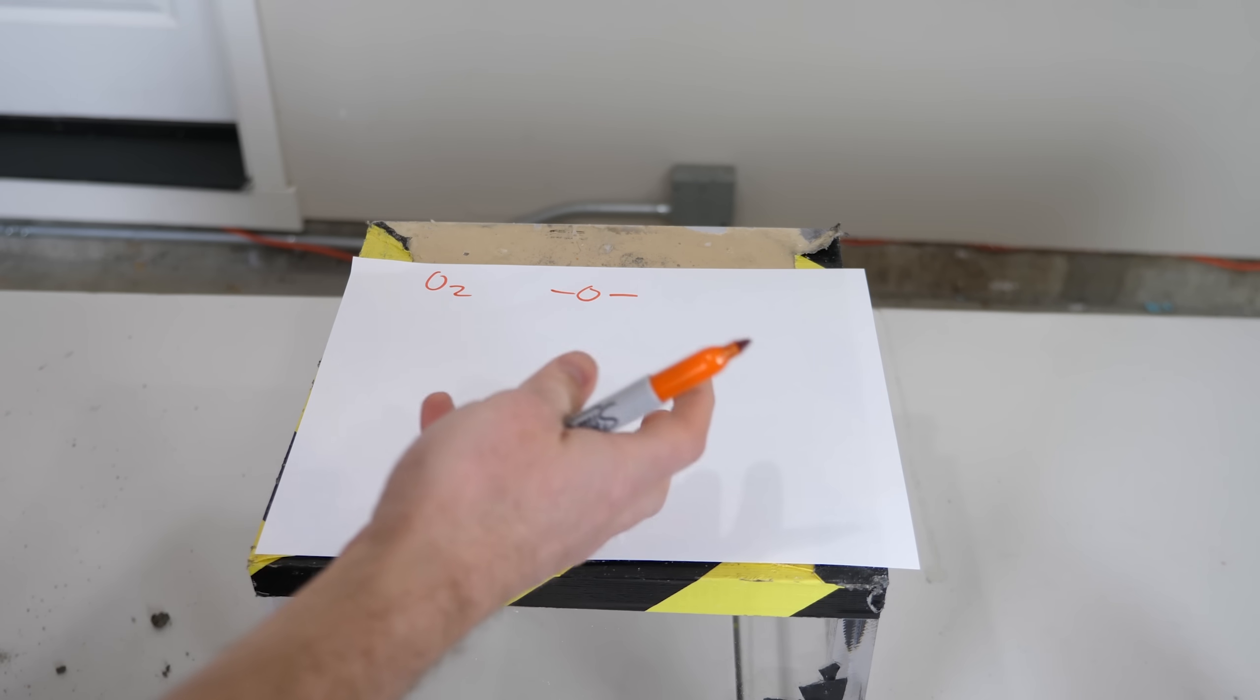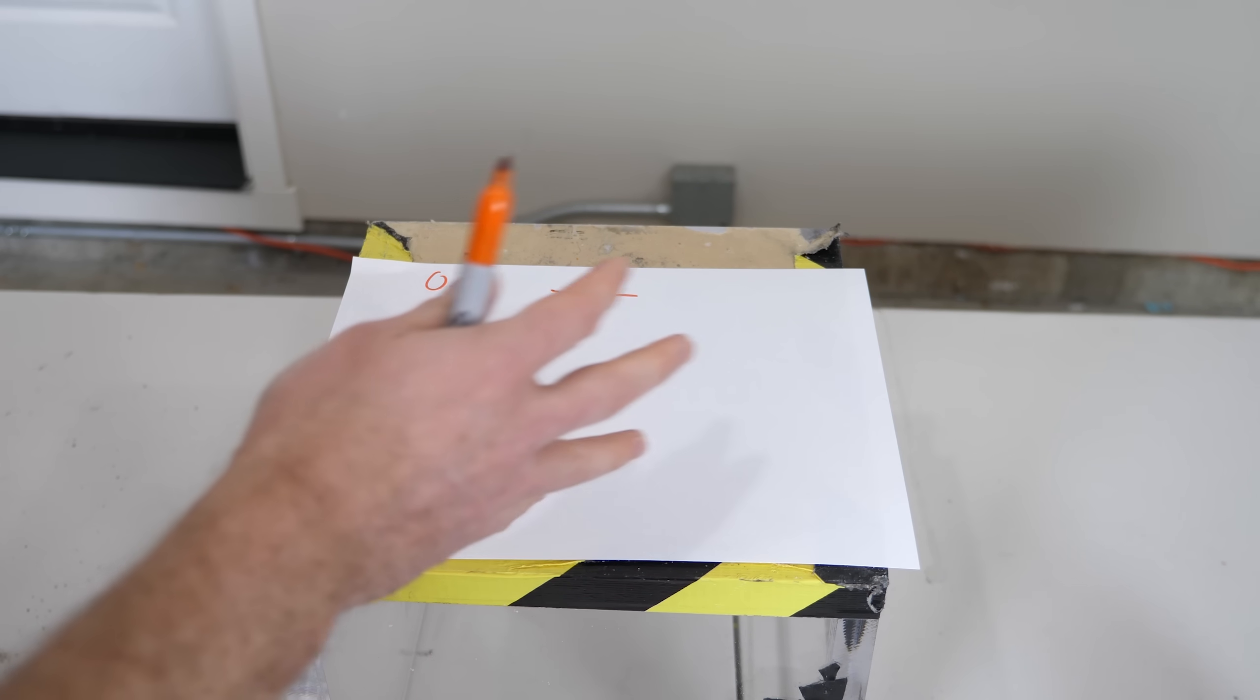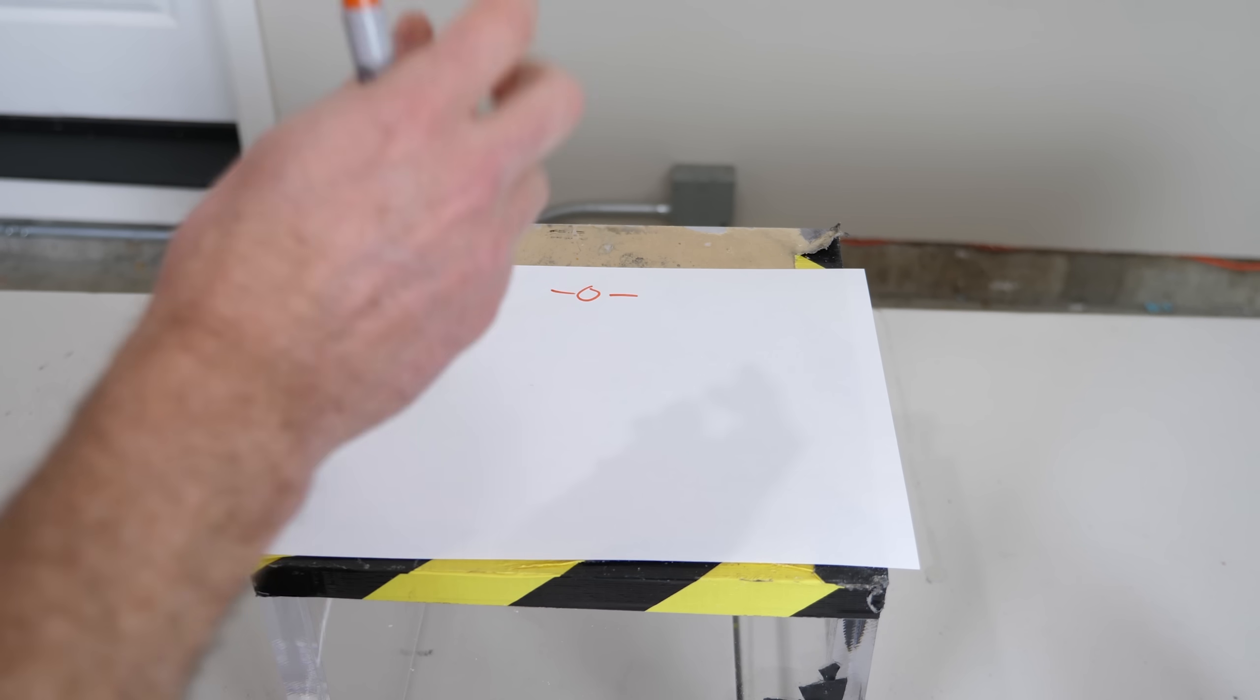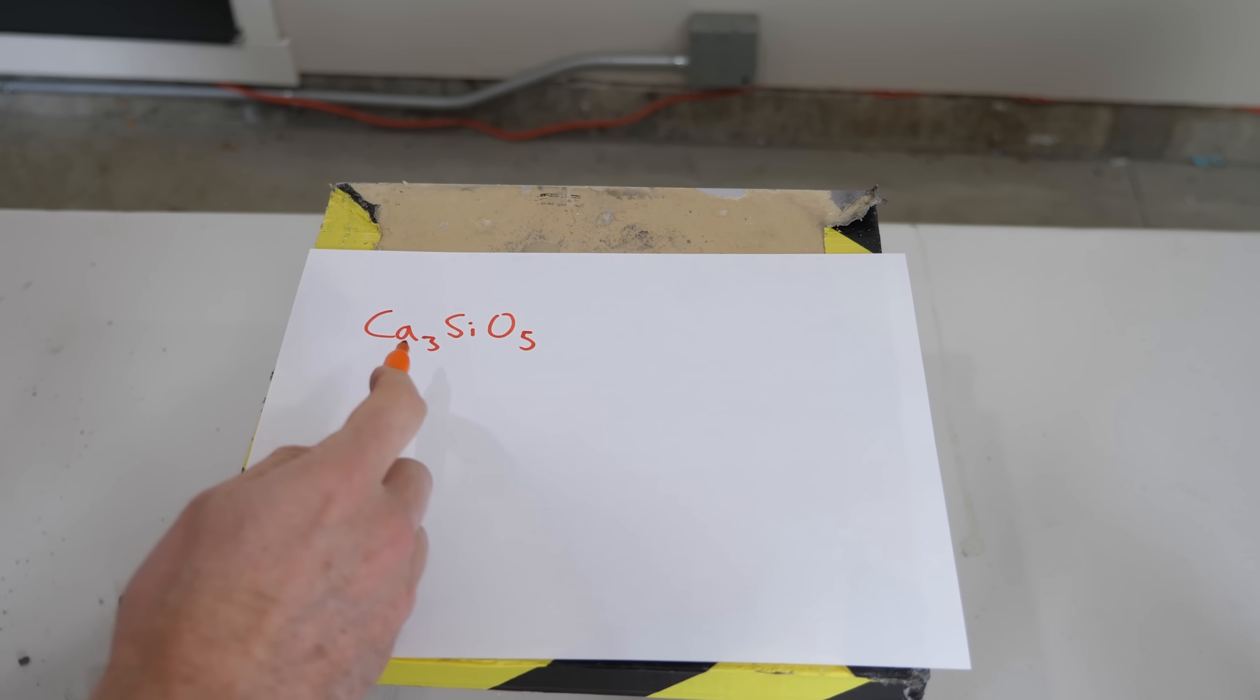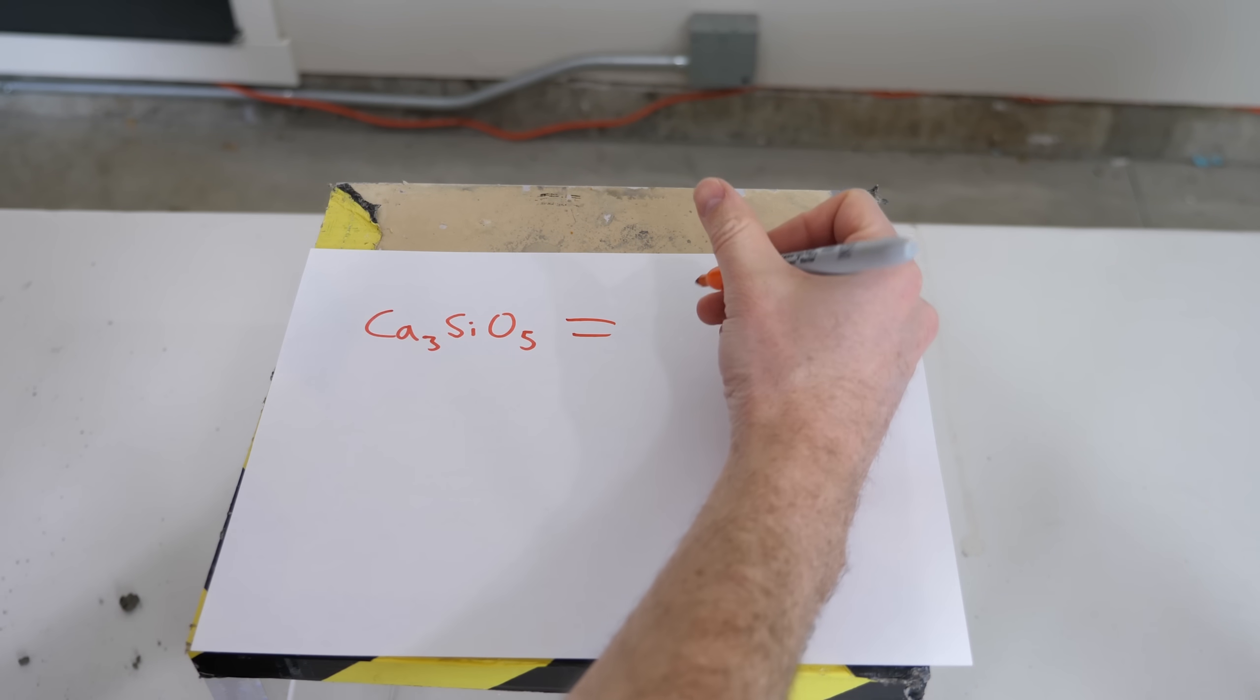So the cement that holds concrete together has a lot of different components in it. But the main component is called tricalcium silicate. It's about 55% of Portland cement. And this is what a molecule of tricalcium silicate looks like. It's made of calcium, silicon, and oxygen atoms. But because this is such a big name to write, a lot of concrete engineers actually use an abbreviated form of this. They actually write it as C3S.